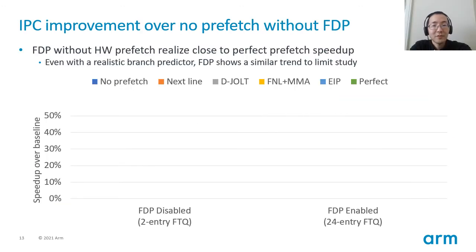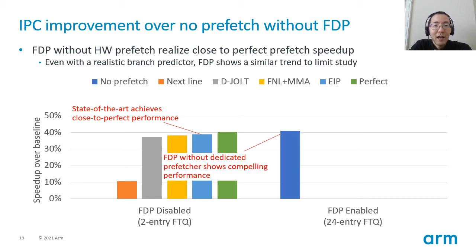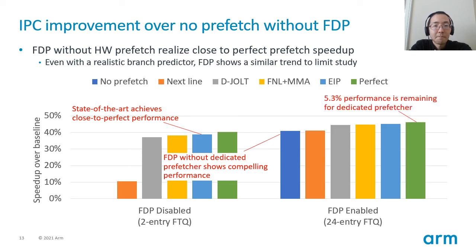The first evaluation result is IPC improvement. This chart is similar to what I presented at the beginning, but we removed all optimism in the branch predictor — for example, using an 8,000-entry BTB instead of a perfect BTB. As we saw in the limited study, state-of-the-art instruction prefetchers show performance close to that of perfect prefetch. However, FDP with dedicated prefetchers outperformed this number. The performance opportunity for perfect prefetch on top of FDP is about 5%, indicating that branch prediction realism did not change the story of our limited study.